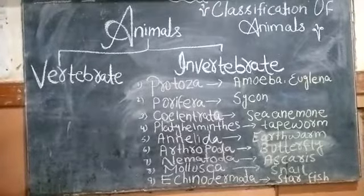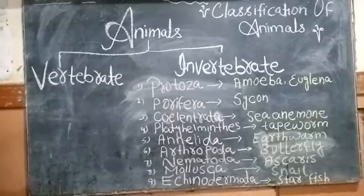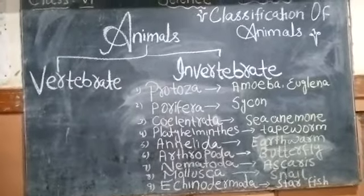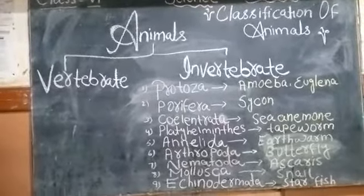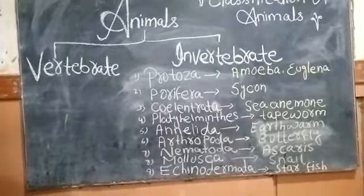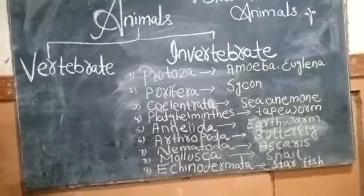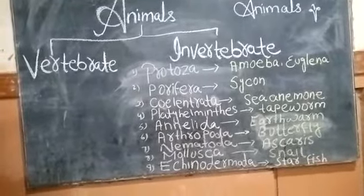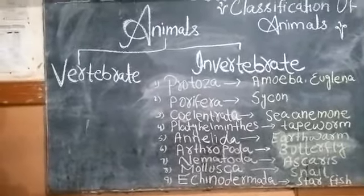Number 4: Phylum Platyhelminthes. Animals in this group have flat bodies. For example, flatworms.